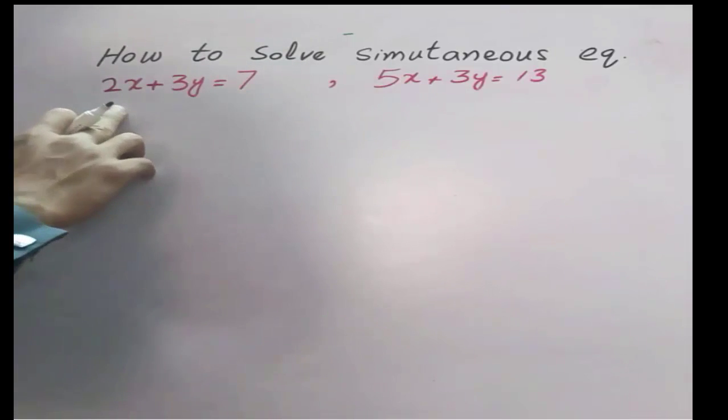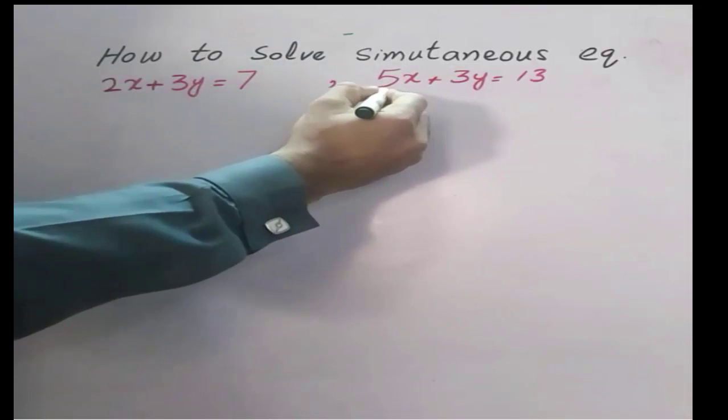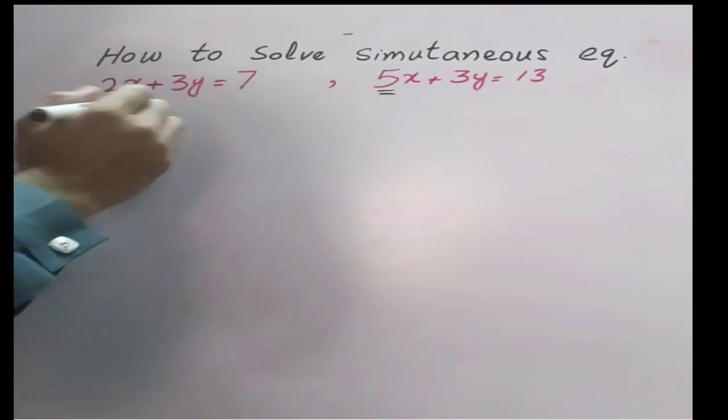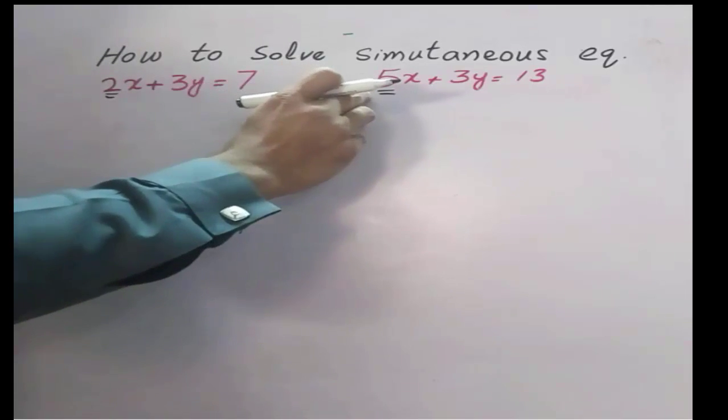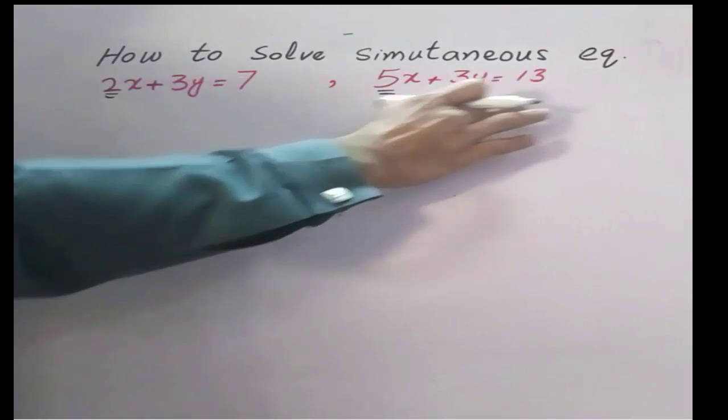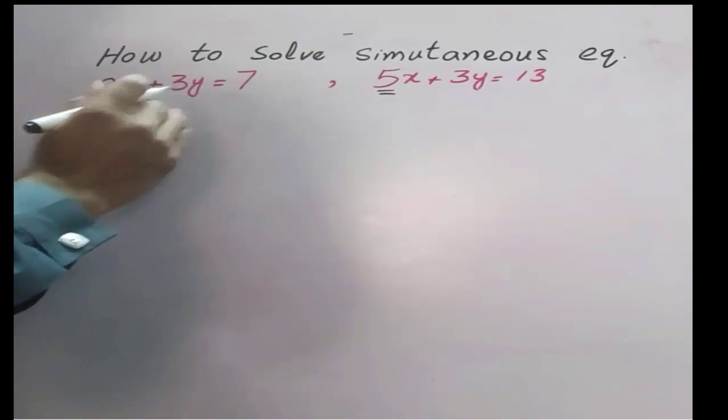For elimination of x, I need to balance the coefficient of x. For this, take this 5 and this 2. This 5 would be multiplied with this, and this 2 would be multiplied with this equation. Our coefficient would be balanced. How? Check.